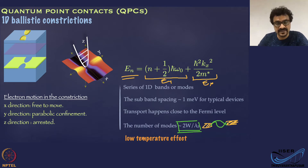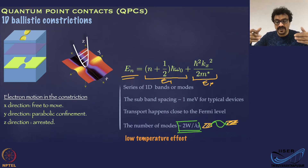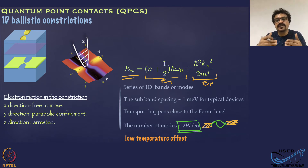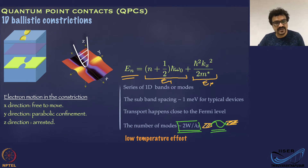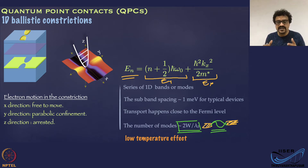When you increase the negative voltage on the gates, the electric field creeps further into the channel and can eventually close it. You can control the width of the channel and therefore the number of modes available near the Fermi level, since transport is happening at the Fermi level. The relevant energy scales are the temperature broadening and the subband spacing. The subband spacing is of the order of milli-electron volts, which means you need a low temperature environment to observe this effect.